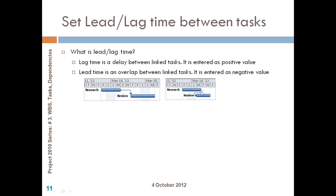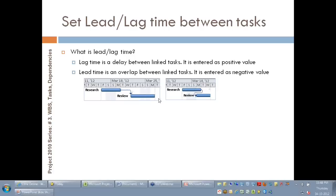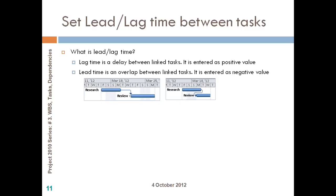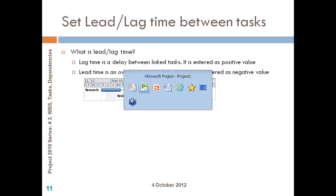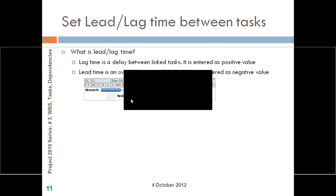The same two tasks — maybe you want to do the opposite: when some research work has been completed, you want to start your review simultaneously. Both these are two different scenarios, but if you look at the arrow connecting them, it is still a finish-to-start dependency. The dependency type is still finish to start, but you either want a lag time (delay) or an overlap time between the two tasks.